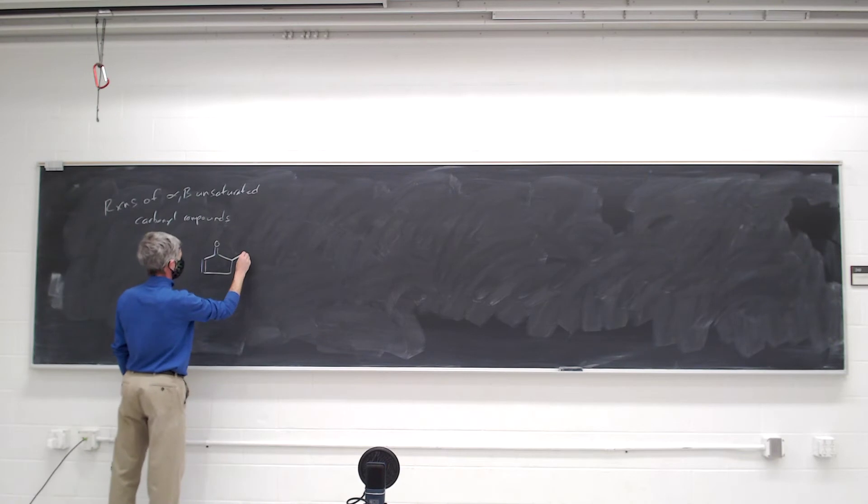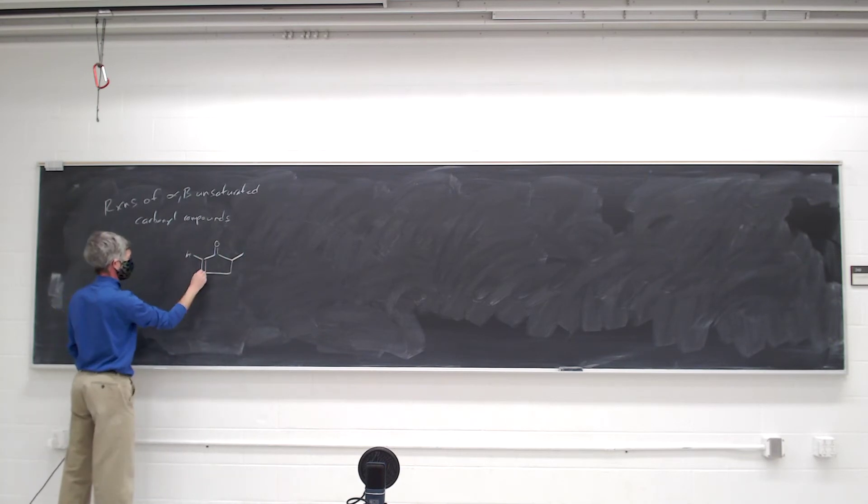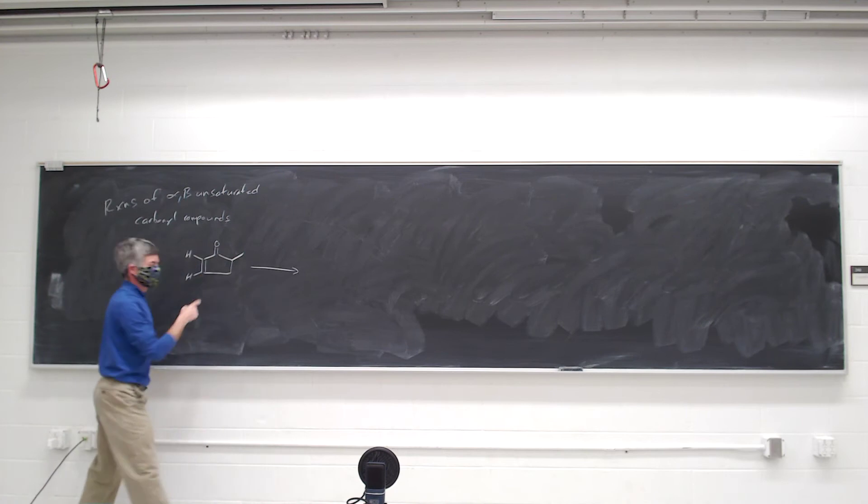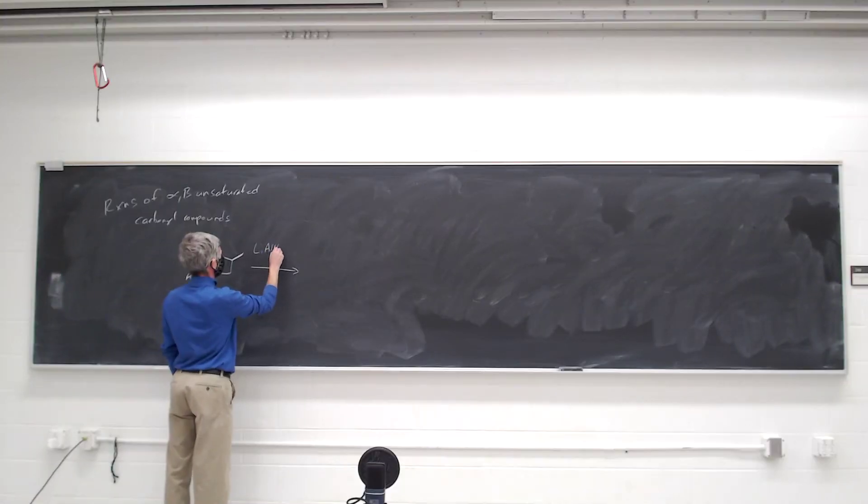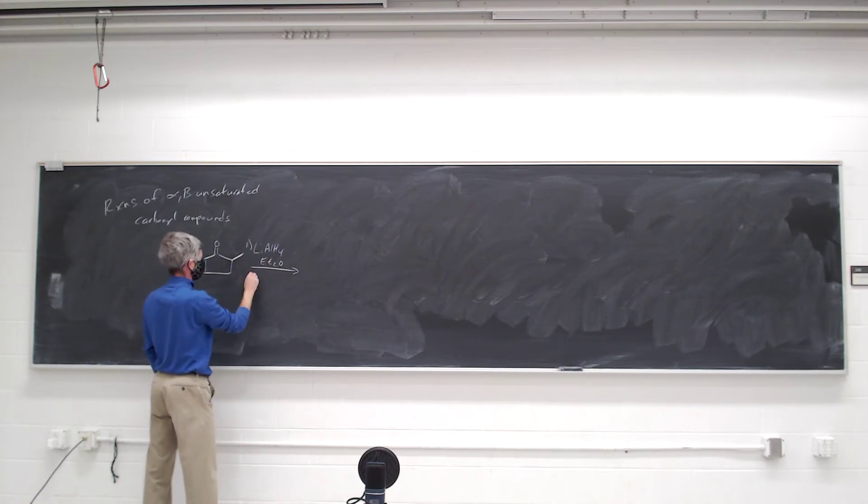So, if you make an alpha-beta unsaturated carbonyl compound like this, you can reduce the carbon-oxygen double bond with lithium aluminum hydride, and you can follow it by making effective workup.